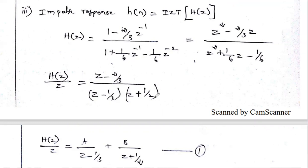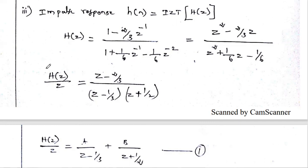Factorizing the denominator polynomial gives (z − 1/3)(z + 1/2). Using the quadratic formula — (−b ± √(b²−4ac)) / 2a — the two roots are 1/3 and −1/2. In the numerator, take z as a common factor: z(z − 2/3).